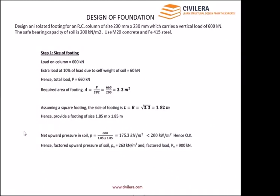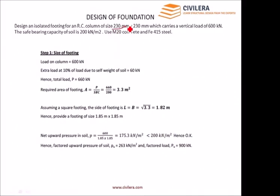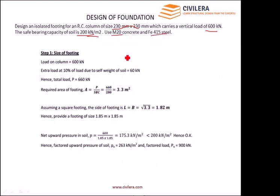Let us quickly go through an example and understand how we can design a foundation. We have a 230x230 column with a load of 600 kN, SBC of 200 kN/m² from the soil report, using M20 and Fe415, designed as per Indian code. The self-weight is taken as 10% extra, so 60 kN, giving a total load of 660 kN.